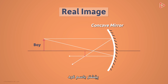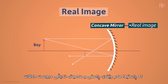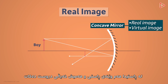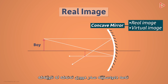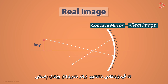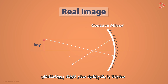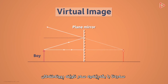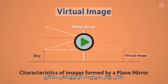Concave mirrors form real images. In fact, they form both real and virtual images. What does it depend on? It depends on the distance of the object from the mirror. We will learn more about the real images formed by concave mirrors in our future videos. First, let's go back to our plane mirrors. This is only one of the characteristics of an image formed by a plane mirror — we will see more in our next video.